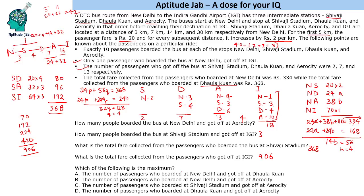The last question: which of the following is maximum? New Delhi to Dholakunha is 3 people, New Delhi to Aero City is 4 people, Shivaji Stadium to Aero City is 3 people, and Dholakunha to Aero City is 6 people. So Dholakunha to Aero City is the maximum. That was the solution to the set and answers to all the questions.